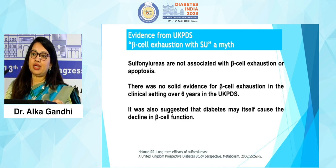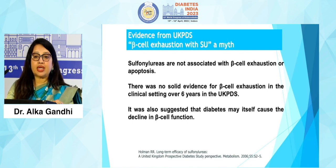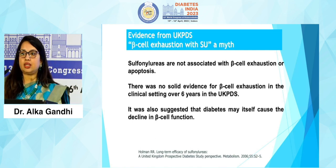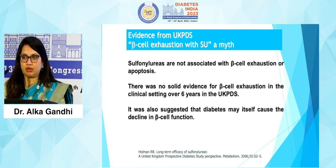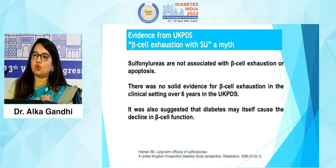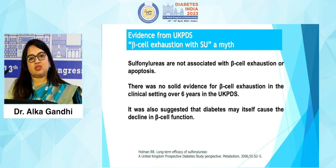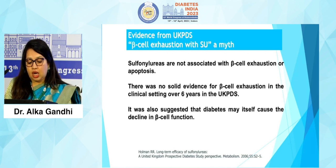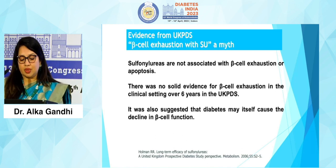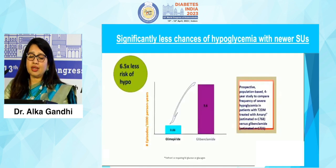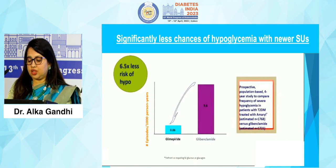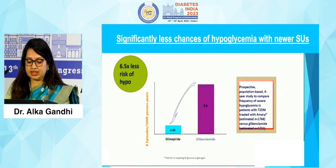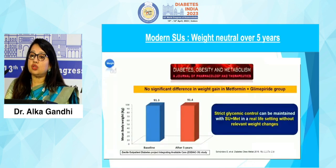UKPDS, the largest trial, has shown that beta cell exhaustion with SU is a myth. Diabetes is a progressive disease with progressive beta cell failure — it is not SU that is responsible. It is glucotoxicity and lipotoxicity responsible for progressive beta cell failure, and UKPDS showed no solid evidence that SU causes beta cell exhaustion. The risk of hypoglycemia with newer SUs is 6.5 times lower — compared to glibenclamide, glimepiride or gliclazide will have a lesser incidence of hypoglycemia.